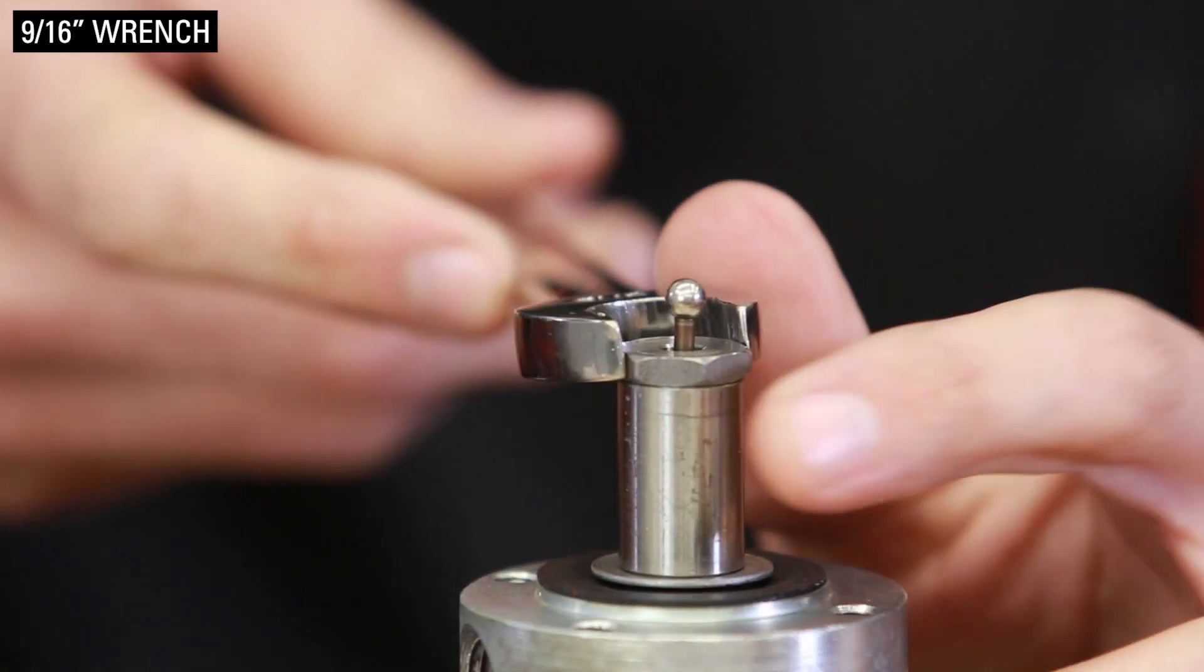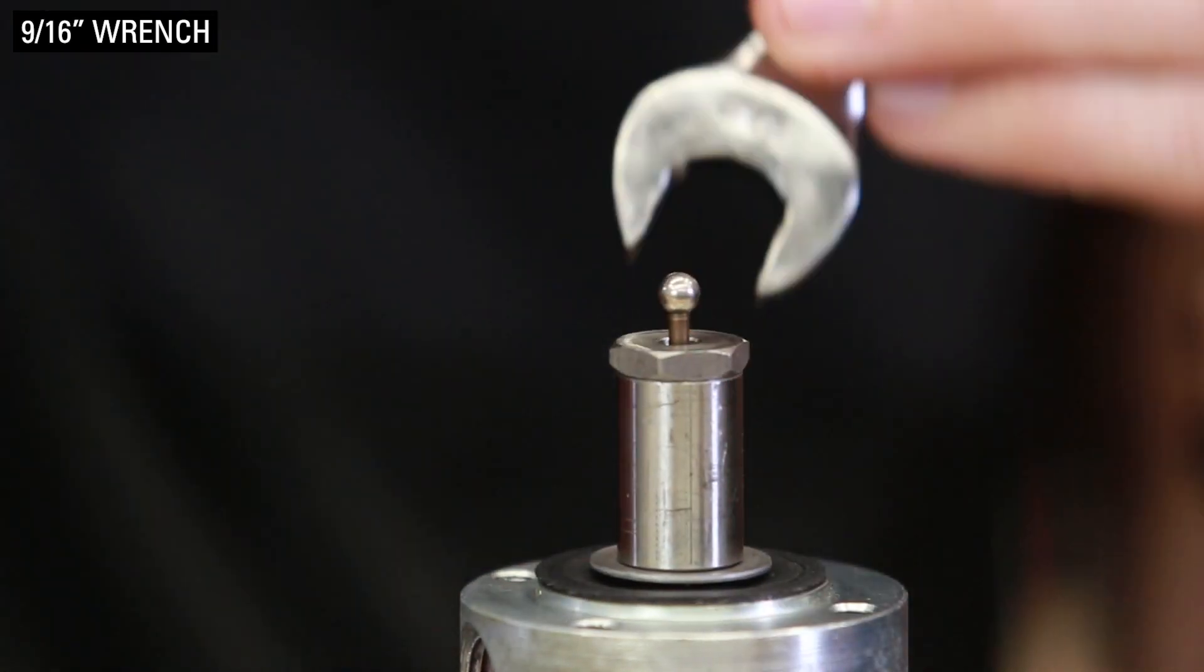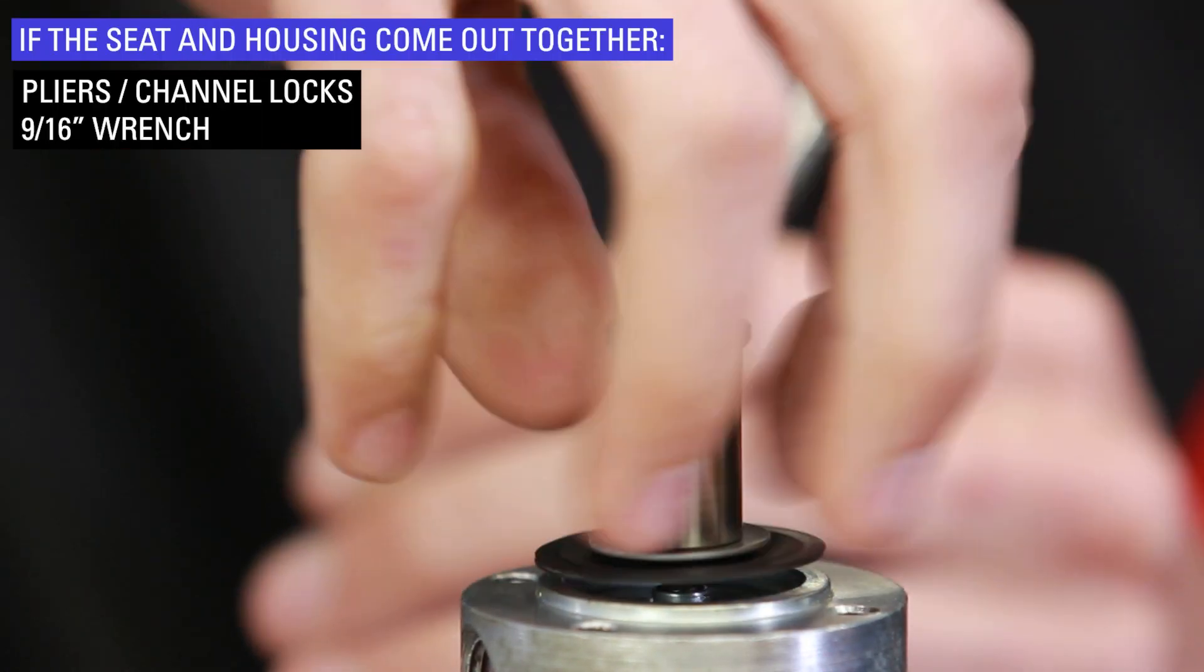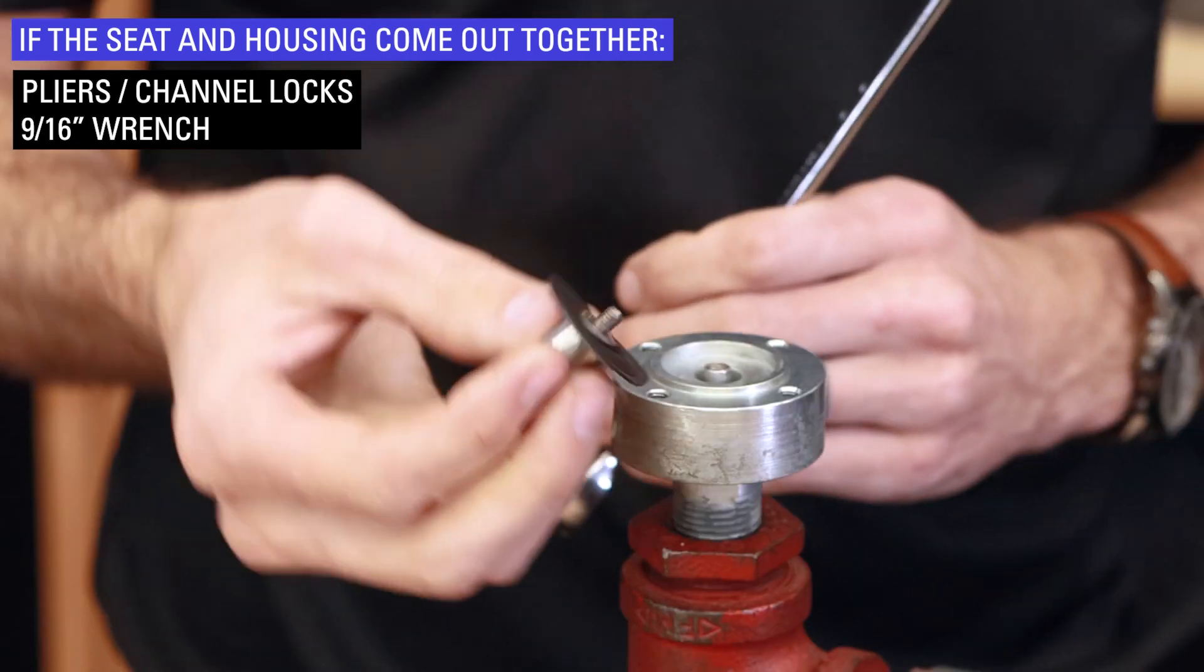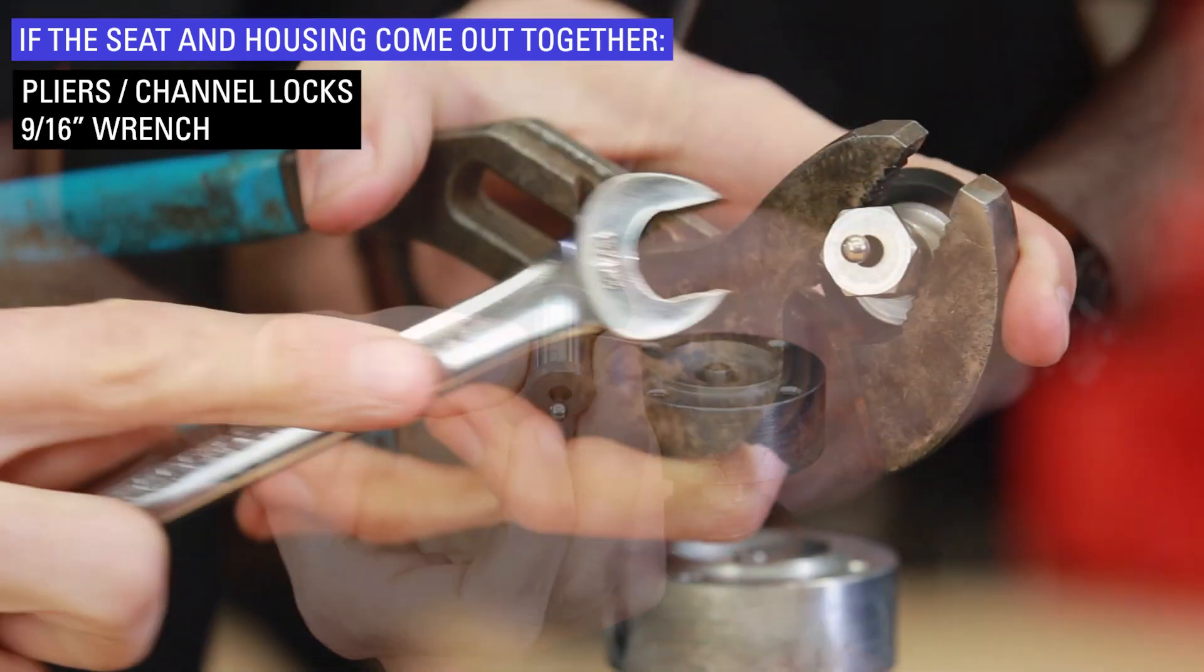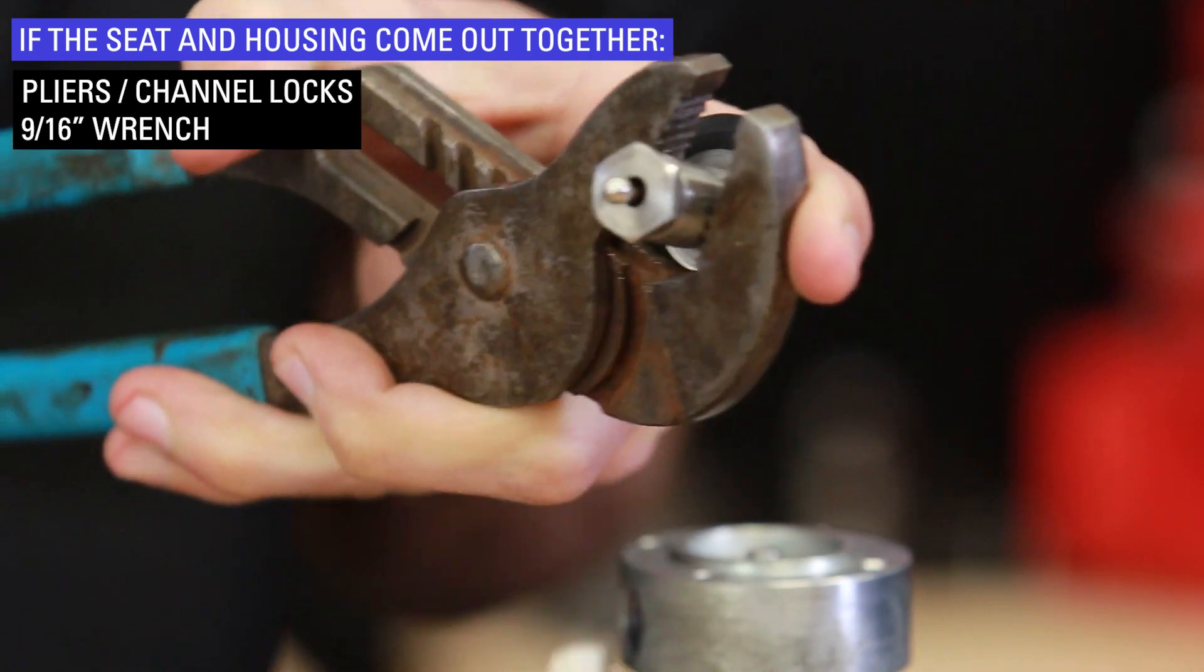Use a 9/16th wrench to loosen the lower seat. If the seat and housing come out together, use pliers or channel locks and a 9/16th wrench to loosen the seat from the housing.